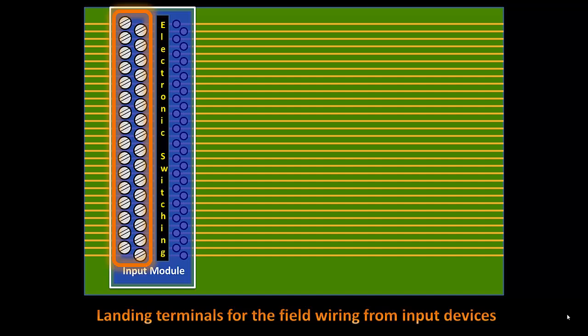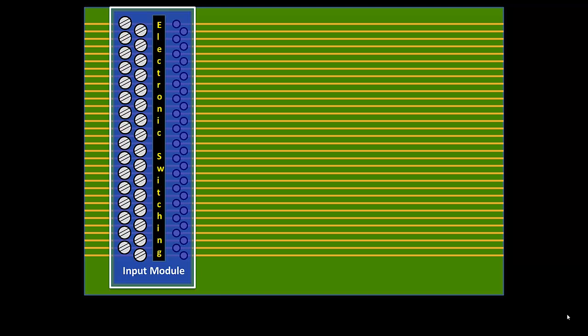These landing terminals are for landing the field wiring from input devices — photo eyes, push buttons, limit switches. You'll typically have a common voltage connection going to all the devices. This is our input module: it inserts electrical influences from the outside into the backplane to control the electrical state of the copper traces. We're not using a battery here, but we're still using EMF — electromotive force — to change the state of the copper traces on the backplane.